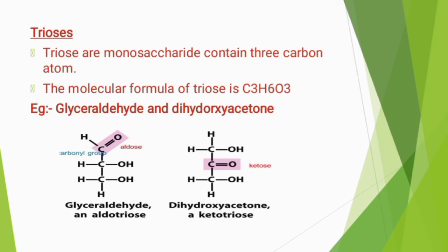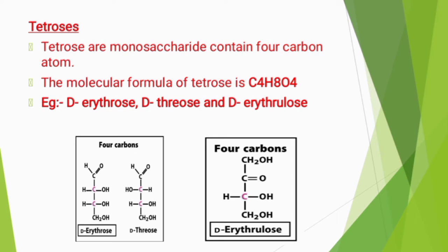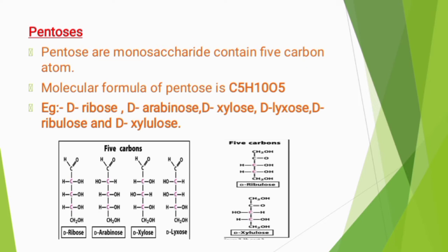Trioses are monosaccharides containing 3 carbon atoms. The molecular formula of trioses is C₃H₆O₃. Examples are glyceraldehyde and dihydroxyacetone. Tetroses are monosaccharides containing 4 carbon atoms. The molecular formula of tetroses is C₄H₈O₄. Examples are D-erythrose, D-threose, and D-erythrulose.